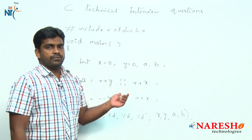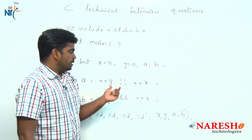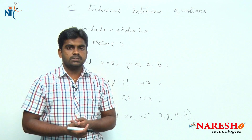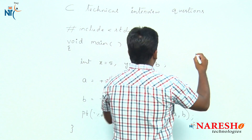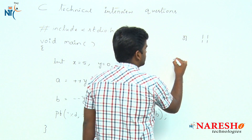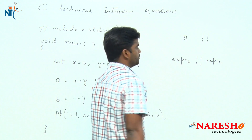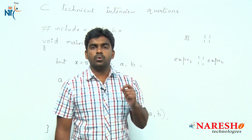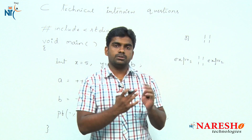In this code we are using the increment and decrement operators concept, along with logical operators. First we should understand how logical operators execute. For the logical OR operator — the double vertical bar — whenever you are comparing two expressions, if the first expression is true, it will directly give the output and will not check the second expression. For OR, one true is enough to return a true value.